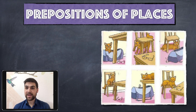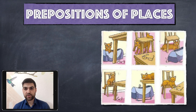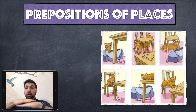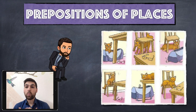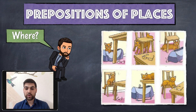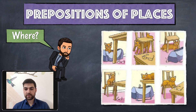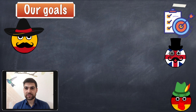In the first picture, the cat is in the bag and the glasses are under the table. In the second picture, the cat is under the chair and the glasses are on the table. Prepositions of place answer the question 'where' — for example, your phone is on the table.